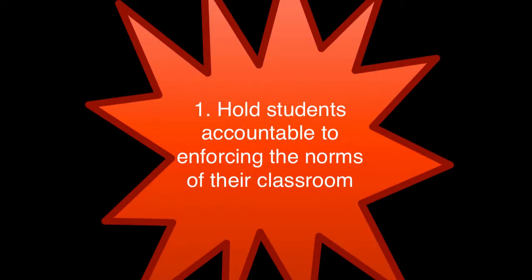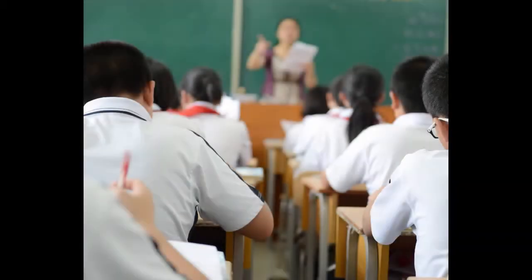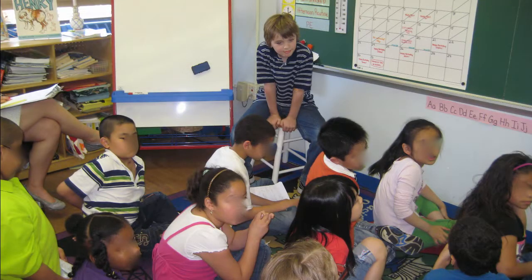Number one: hold students accountable to enforcing the norms of their classroom. Responsibility to enforce norms has traditionally been assigned to the teacher alone, leaving students to be only responsible for doing what they're told. When students enforce rules within the formats as directives to their peers, and when peers respond with commitments to change behavior, students engage in an active process of norm learning or internalizing — holding the rule in mind while relating it to actions.